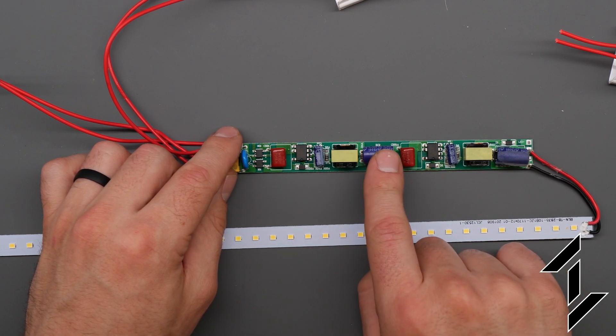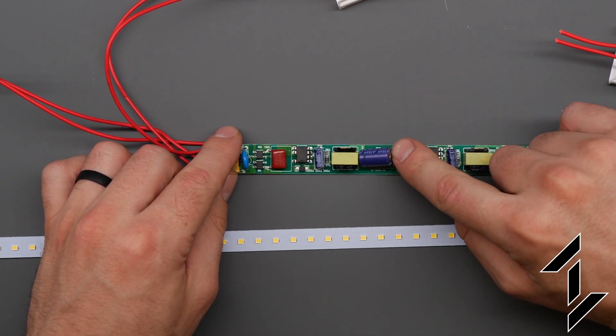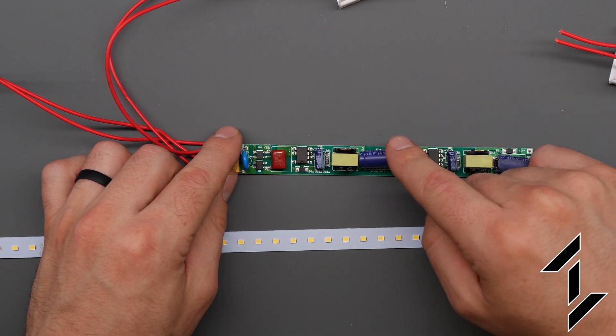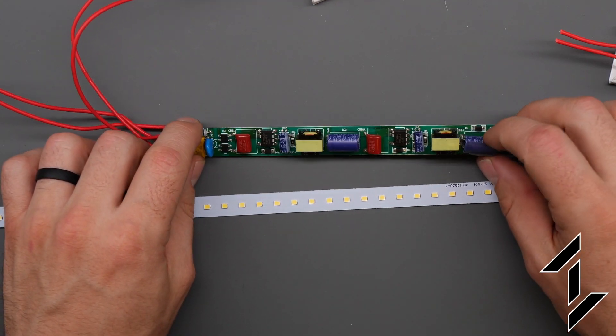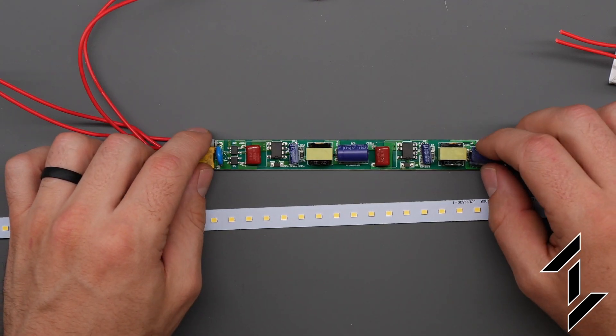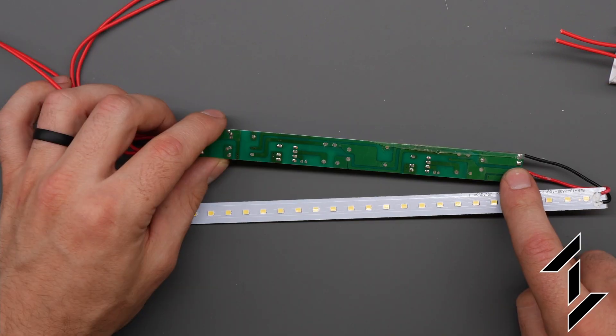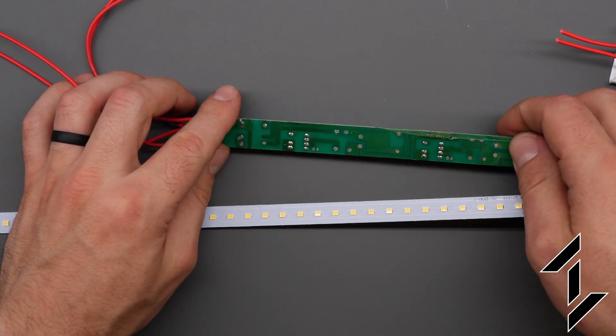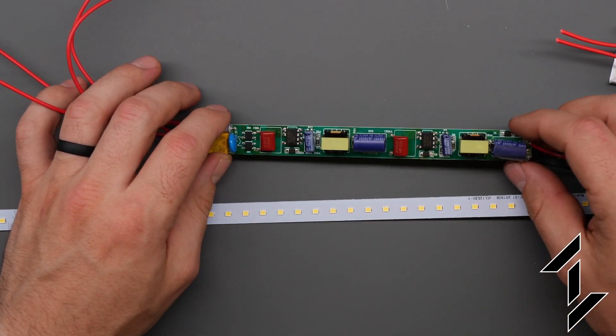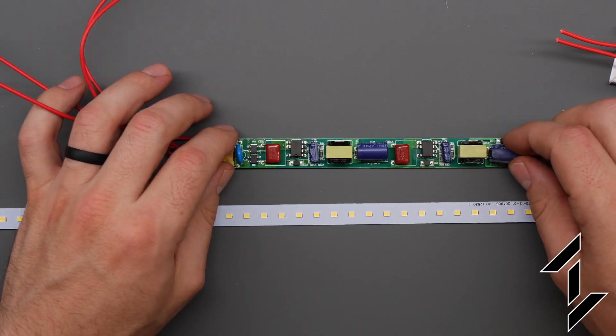Now one other thing to look at is these electrolytic capacitors because they sometimes fail in devices. The way you can kind of tell that most of the time is the end will start bulging out. Now both of these for this first circuit and the second circuit seem fine so I don't think that those are causing this entire fixture to fail. Everything else looks pretty good on that. These are mostly through hole components with only a few of them being surface mount components. It's a pretty cheap board. It's a two layer board. Nothing fancy but it's about what we expect for a budget sort of AC to DC LED power supply like this.